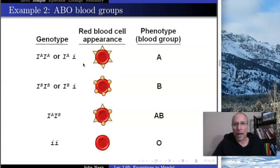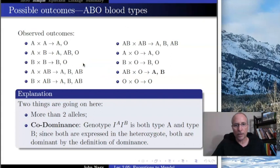Let's take a look at what we actually observe in all of those matings. Two individuals who are type A can produce babies who are either A or O. Individuals who are A and B, an A parent and a B parent, can produce offspring who are AB, A, B, and O.